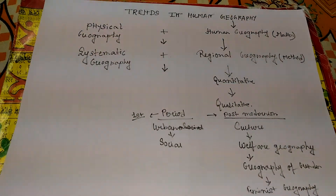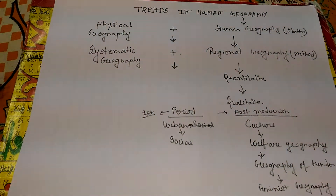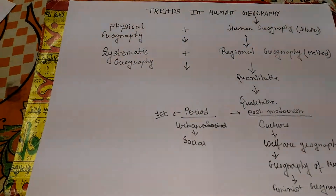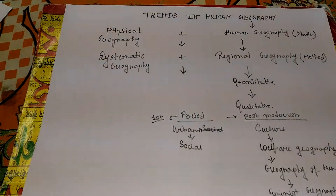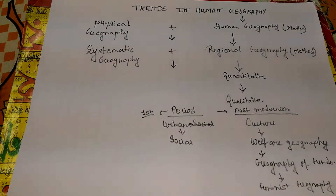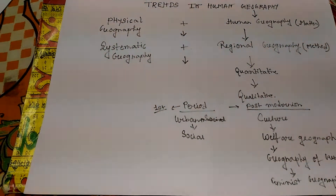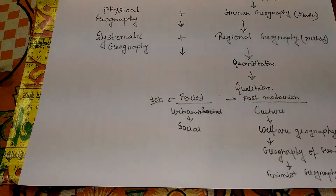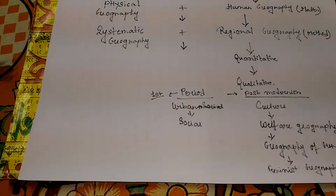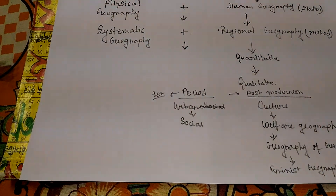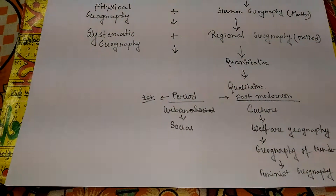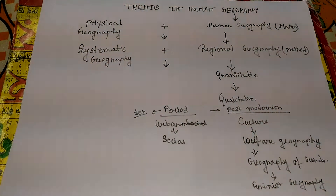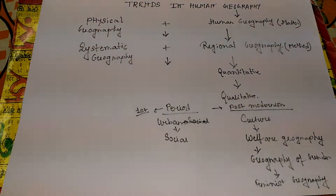Systematic geography deals with theory, model-building, and explanation of phenomena, with emphasis on quantitative methods. Regional geography similarly adopted quantitative approaches — developing theories, model-building, and applying statistical and scientific methods. However, over time, new qualitative dimensions emerged to better understand the man-environment relationship, recognizing limitations of purely quantitative analysis.